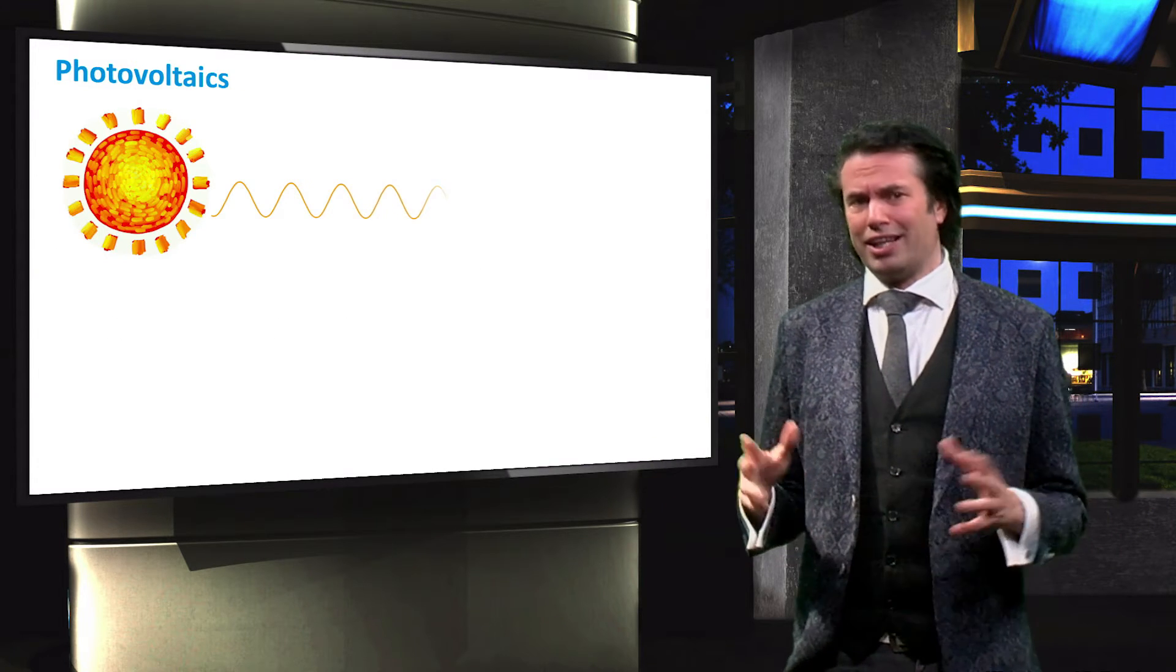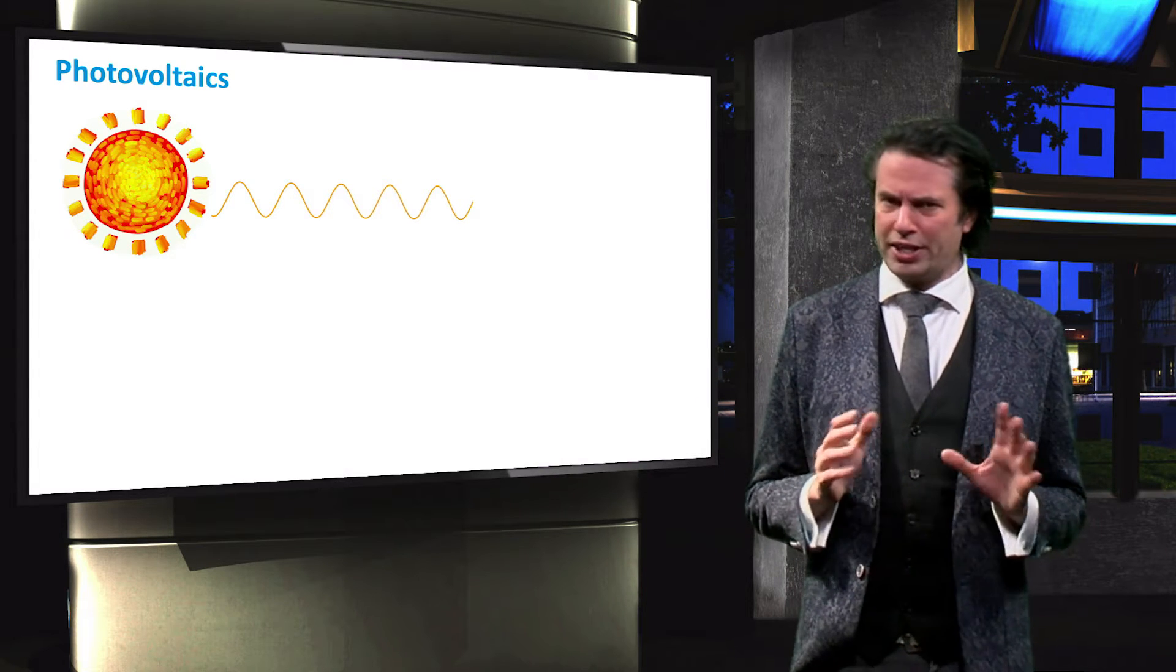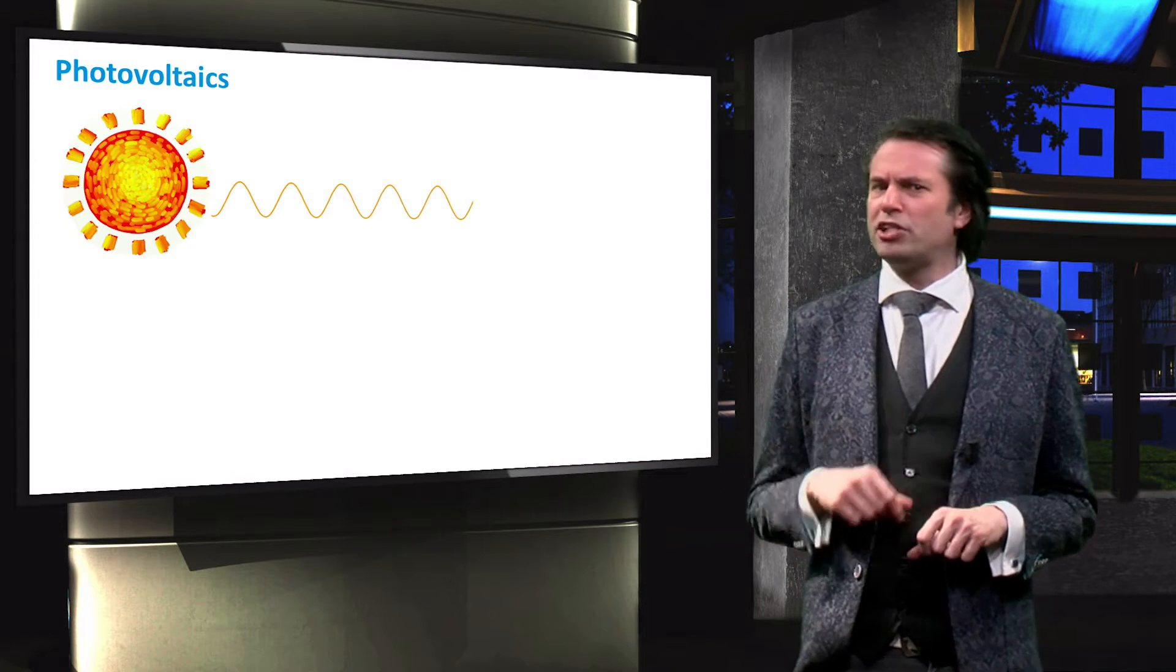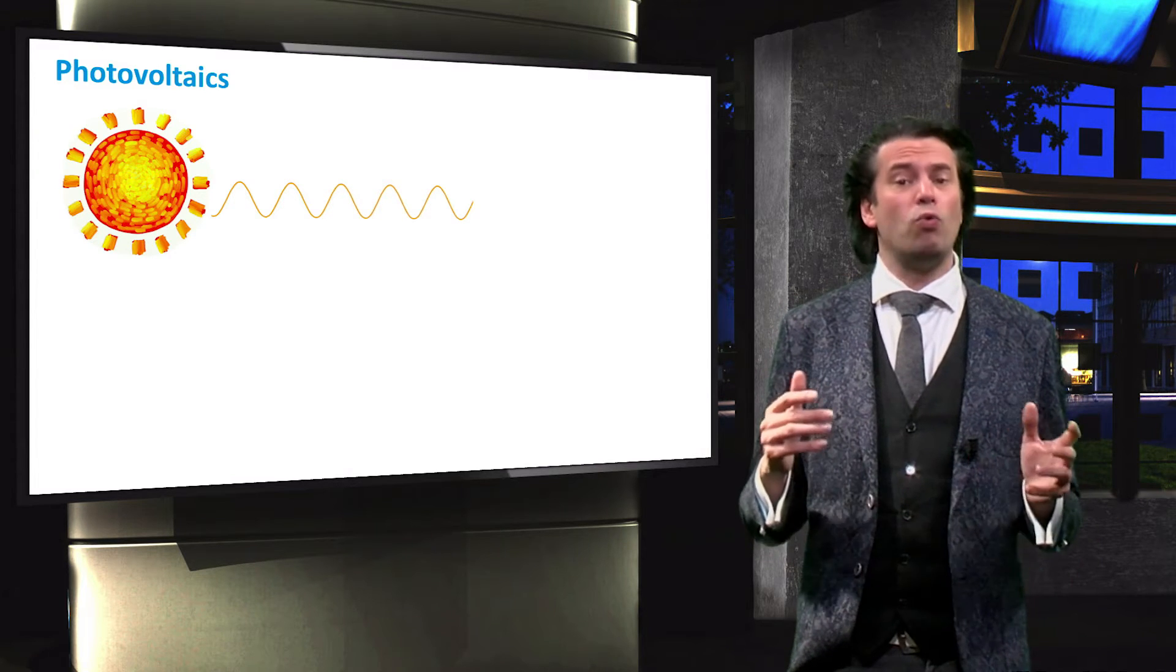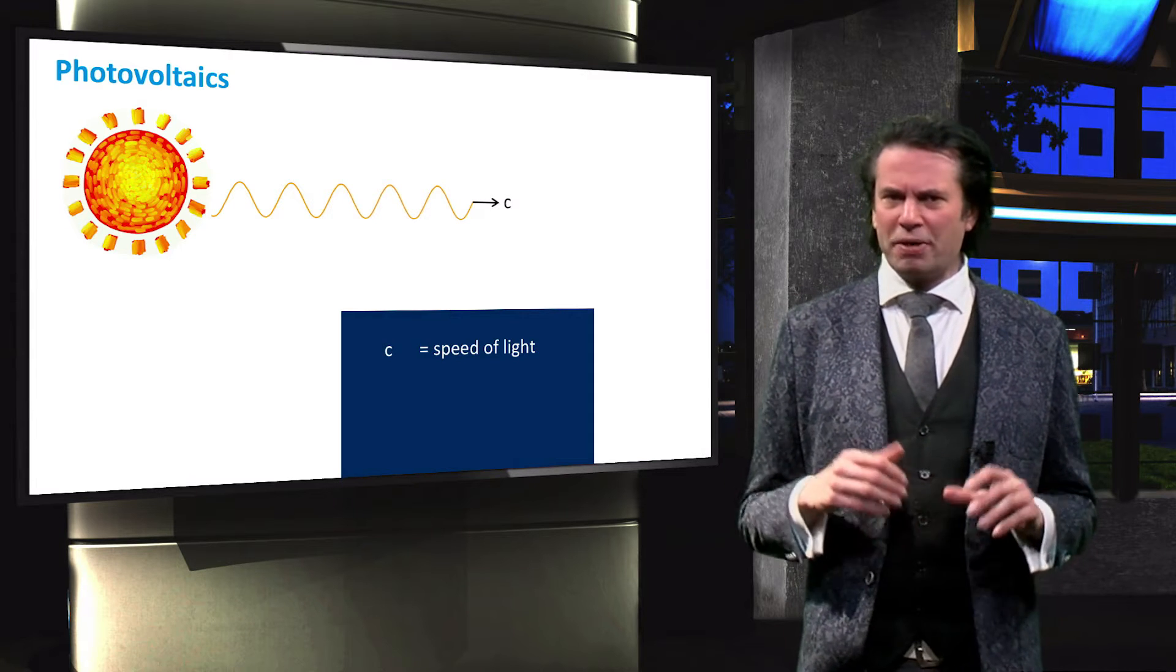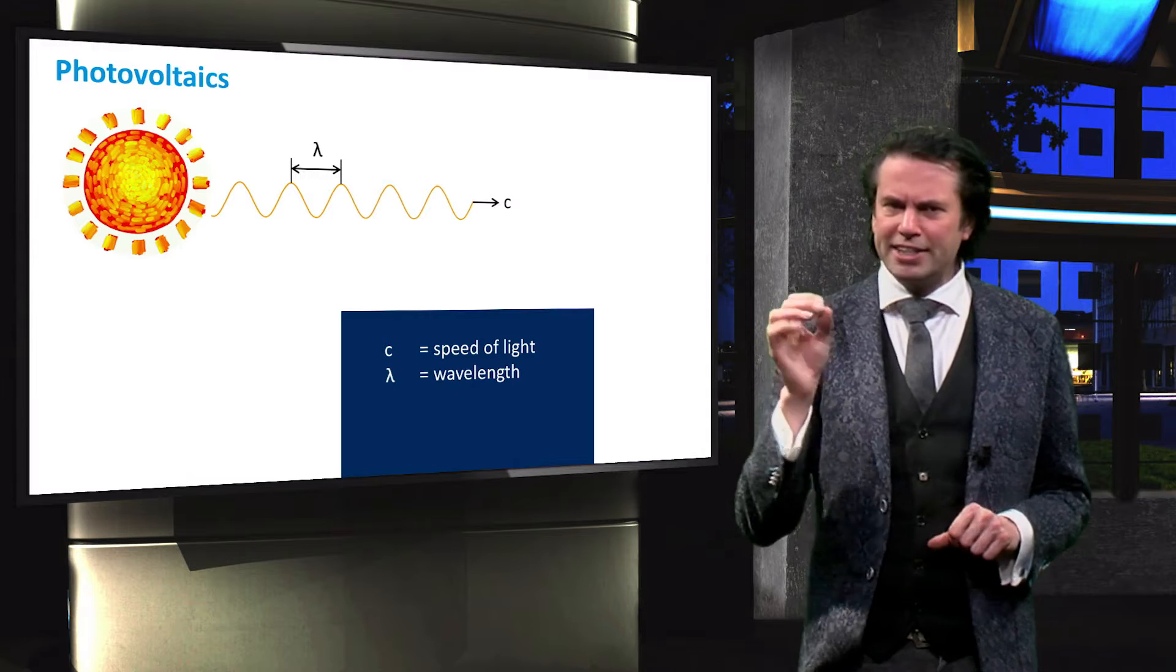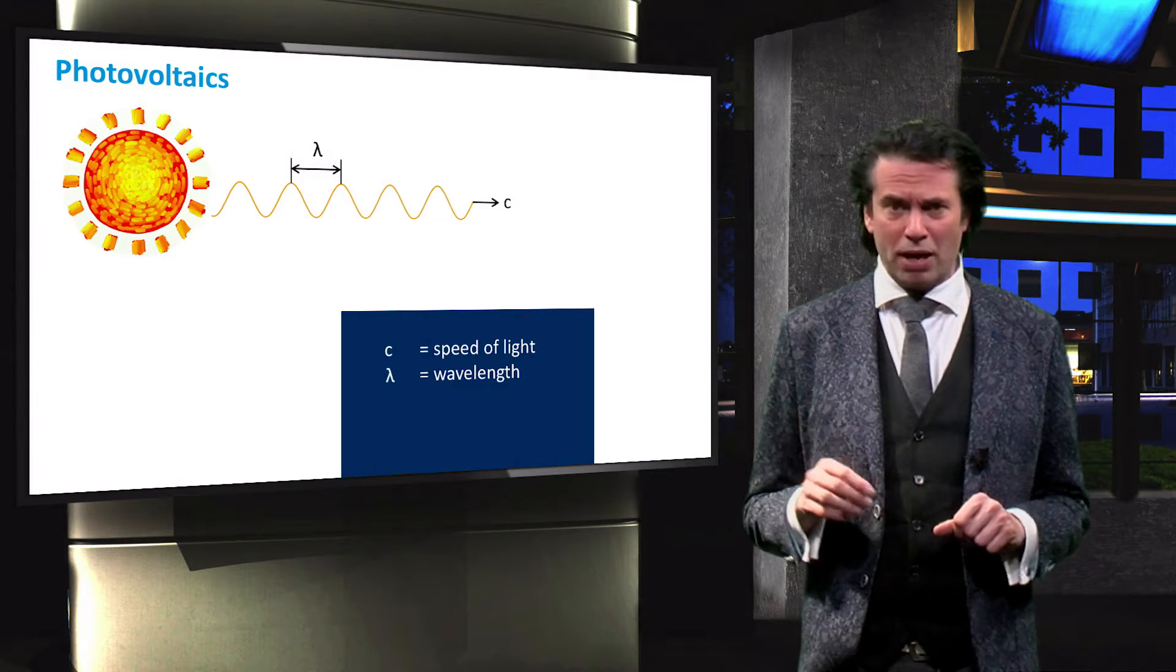As we will discuss later in this course, light is a form of electromagnetic radiation. The properties of this radiation can in some respects best be described by a wave. Such a wave is shown here, propagating at the speed of light. The distance between the two wave peaks is known as the wavelength, indicated by lambda.